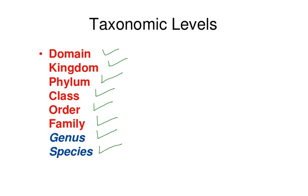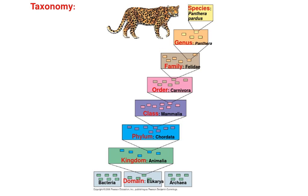A helpful mnemonic is: 'Dear King Philip Came Over From Greece Saturday.' For example, the leopard Panthera pardus: Domain Eukarya, Kingdom Animalia, Phylum Chordata (meaning it has a vertebral column), Class Mammalia (gives milk), Order Carnivora (eats meat), Family Felidae, Genus Panthera, and Species Panthera pardus. You can classify all living organisms according to these taxonomic levels.